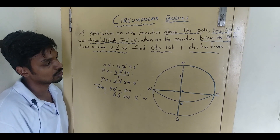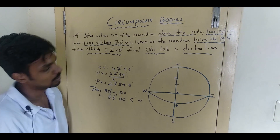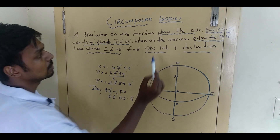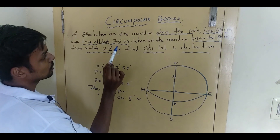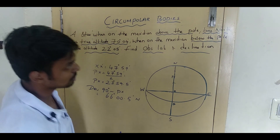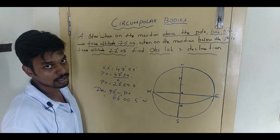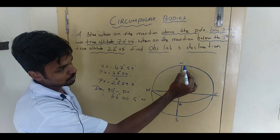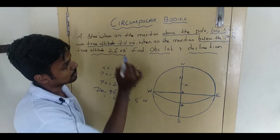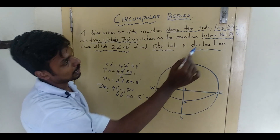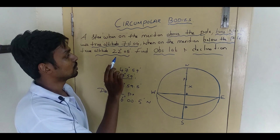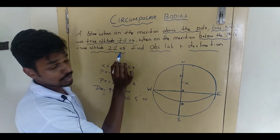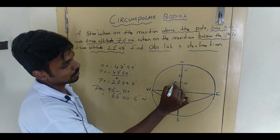This will be your rational horizon diagram. Here is the zenith, this is the equator, and this is your pole. It is clearly mentioned above the pole bearing north — the true altitude is 70 degrees 04 minutes. True altitude is from your true horizon to your body. So from here you calculate 70 degrees — call this point X, which is 70 degrees 04 minutes. Below the pole, true altitude 20 degrees 05 minutes; horizon to body is 20 degrees 05 minutes — call this X'.